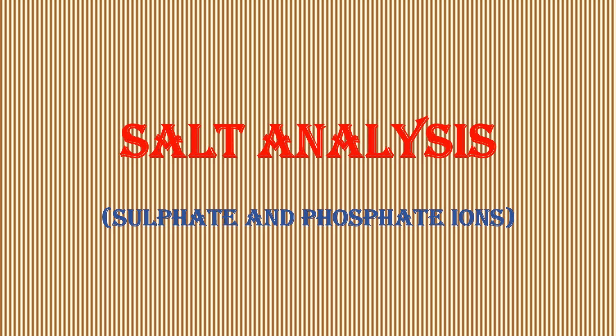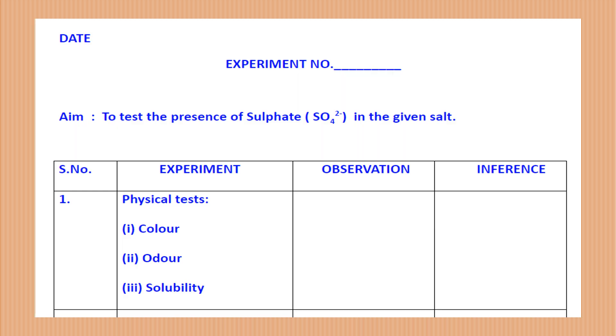Hello students, let's discuss sulfate and phosphate ion tests which are tested individually. That means they do not belong to dilute or concentrated sulfuric acid, though we have discussed 9 ions before them. They are to be tested individually. This will be experiment number 10 of your chemistry practicals.